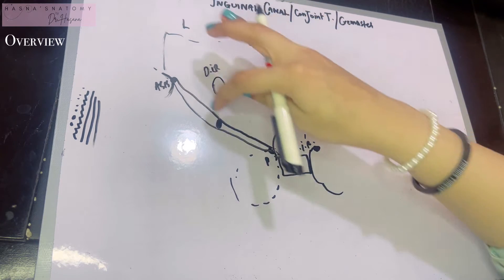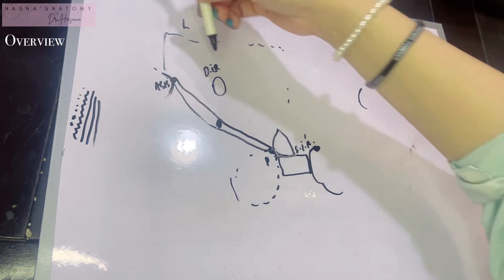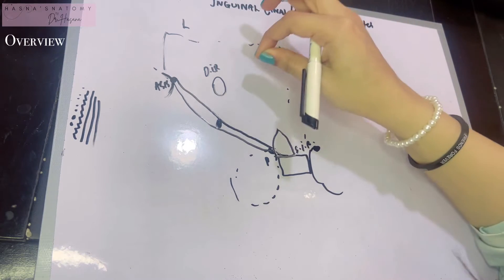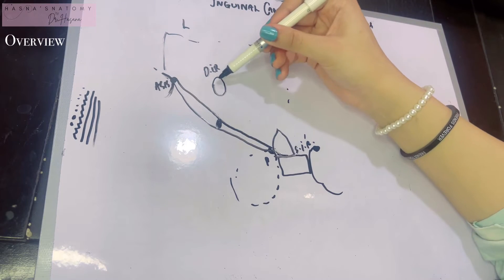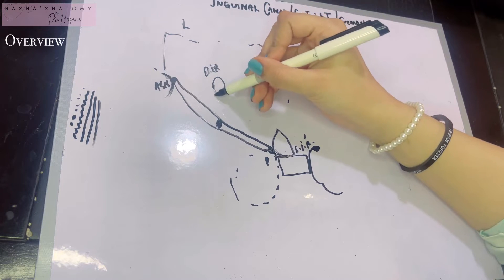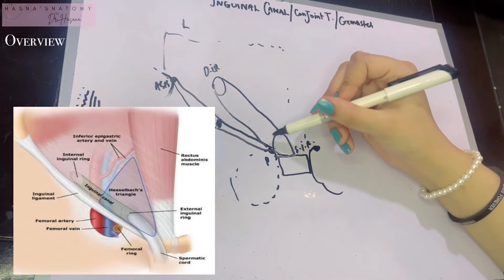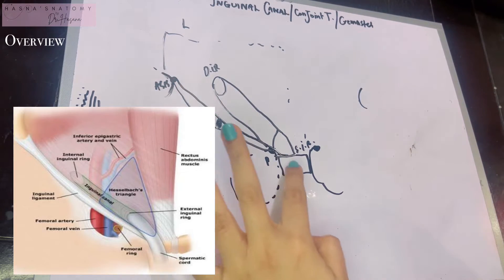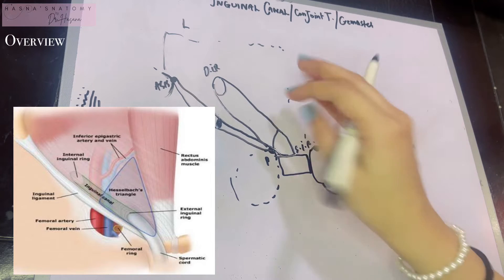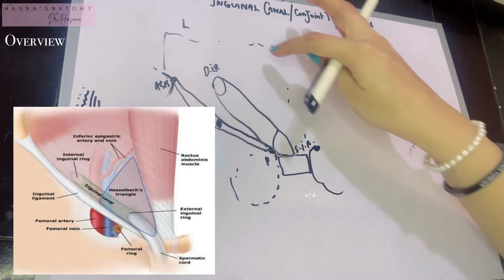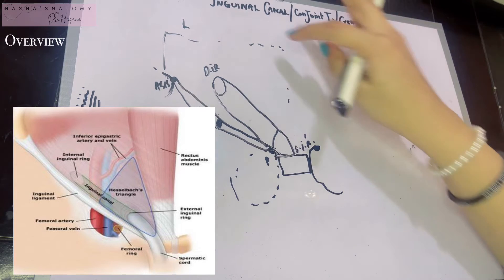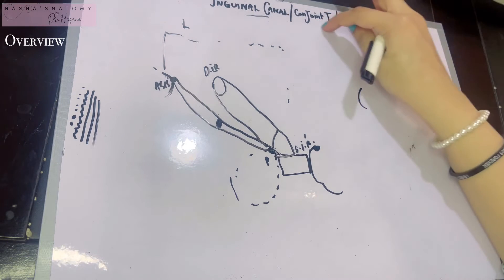The point of the deep inguinal ring and the superficial inguinal ring is that anything passing from deep to superficial enters an oblique intermuscular passage which begins from the deep inguinal ring and ends at the superficial inguinal ring. This oblique intermuscular passage is known as the inguinal canal. It runs approximately four centimeters in size, is larger in males than females, and lies on the lower part of the anterior abdominal wall just above the inguinal ligament.